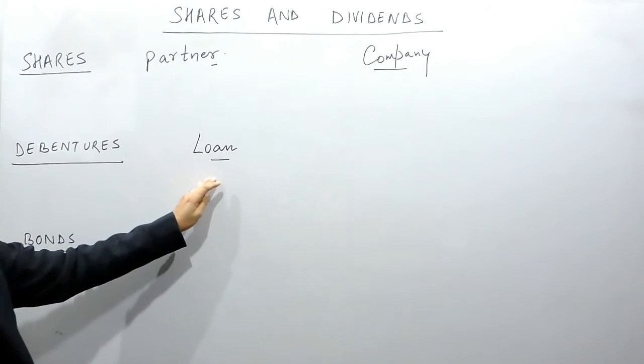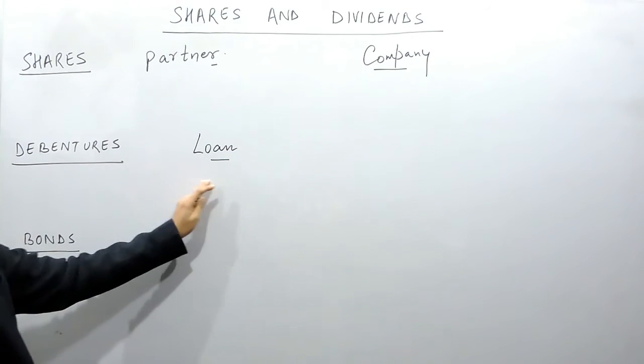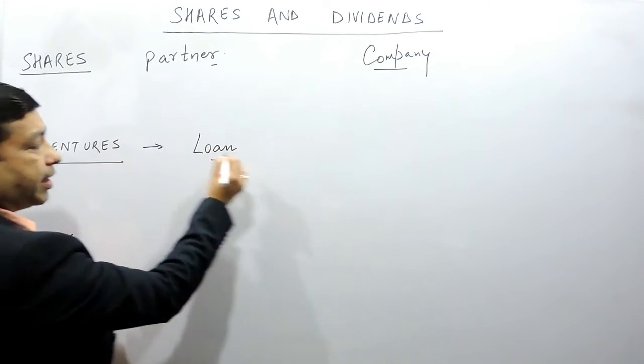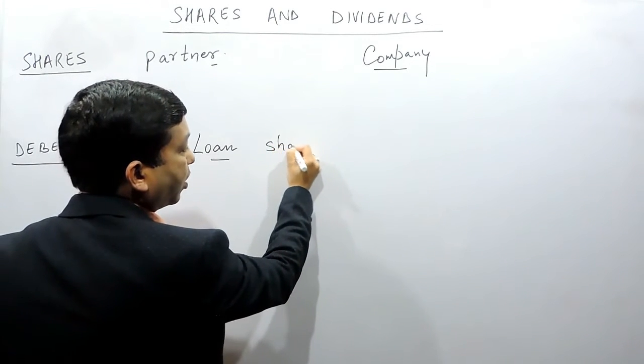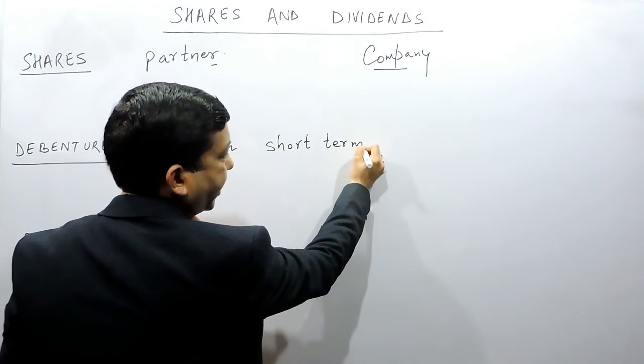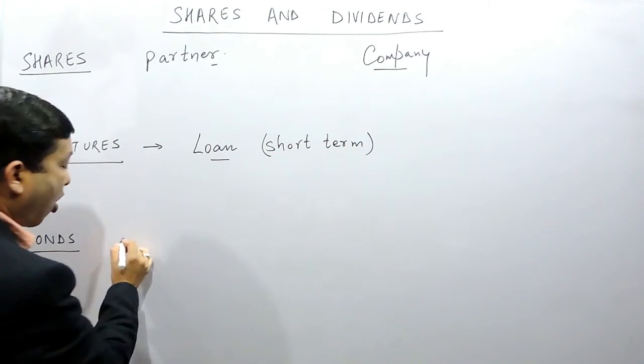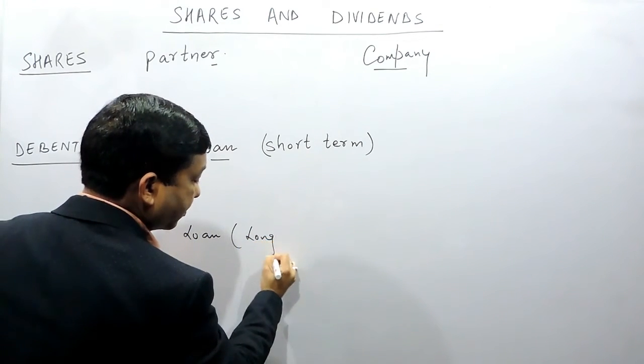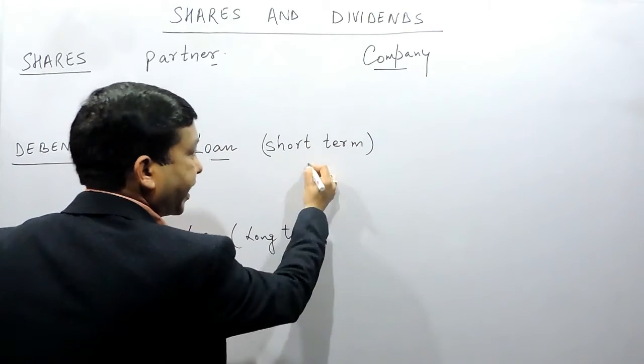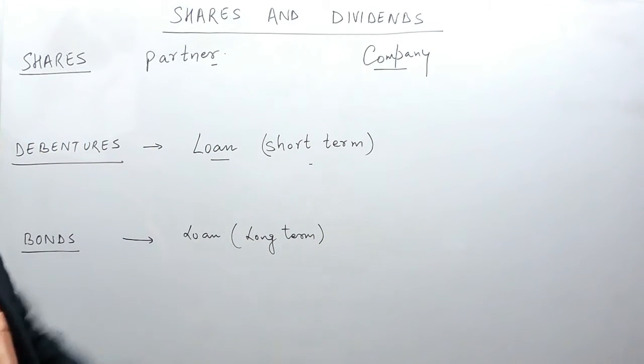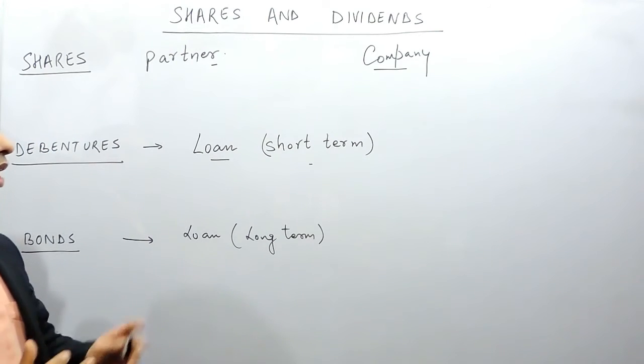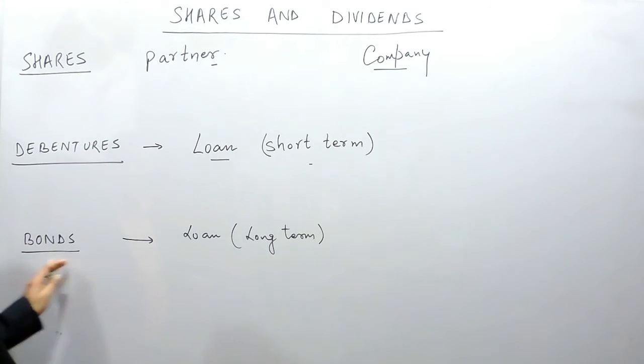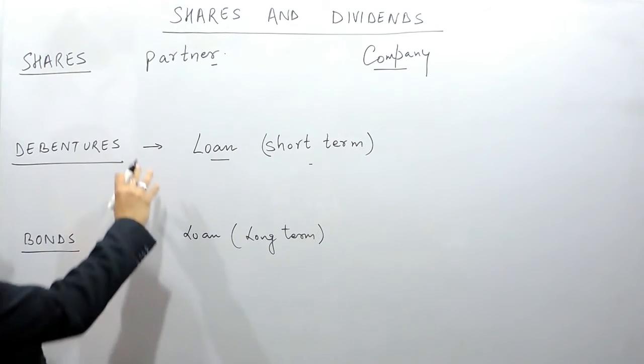Debentures are basically short-term loans taken by the company. Bonds are basically loans which are long-term. In the case of debentures, the lock-in period in which you cannot take money from the company is either two years or three years, while in the case of bonds it may be 10 years or more than 10 years. But in class 10th you don't get questions on debentures and bonds.